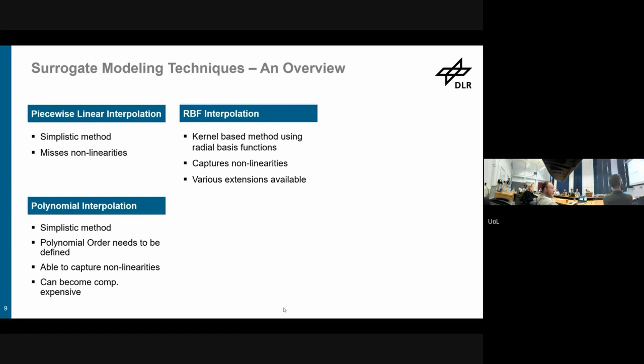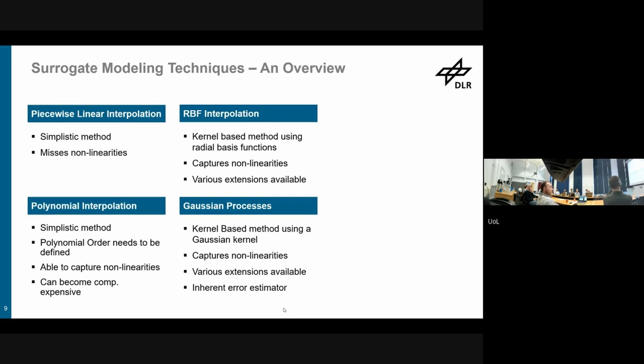There are tools out there where you can directly take a radial basis function model. There are Gaussian processes, which is a model I will speak about a bit later. Also kernel-based methods using a Gaussian kernel. It captures nonlinearities, there are various extensions available, and sometimes people say they have an inherent error estimator as it is built up on a Gaussian model or a Gaussian assumption. There is an ability to assess the model for its variability at the end of the day, which is something you can nicely exploit later on. Also, for Gaussian process, there are plenty of toolboxes out there that you can simply take and use.